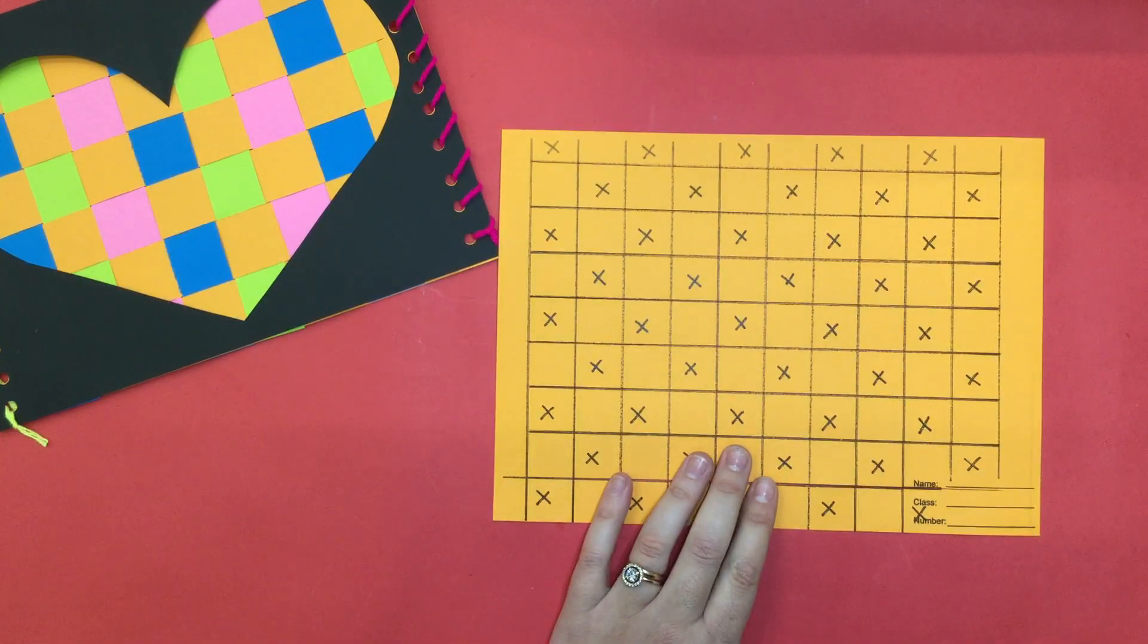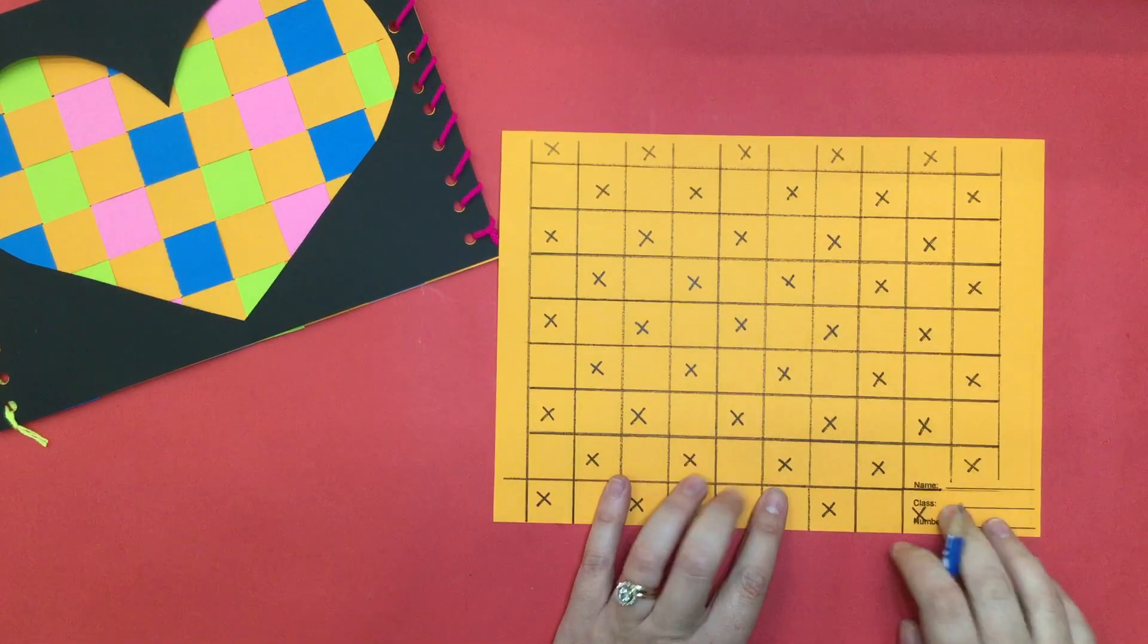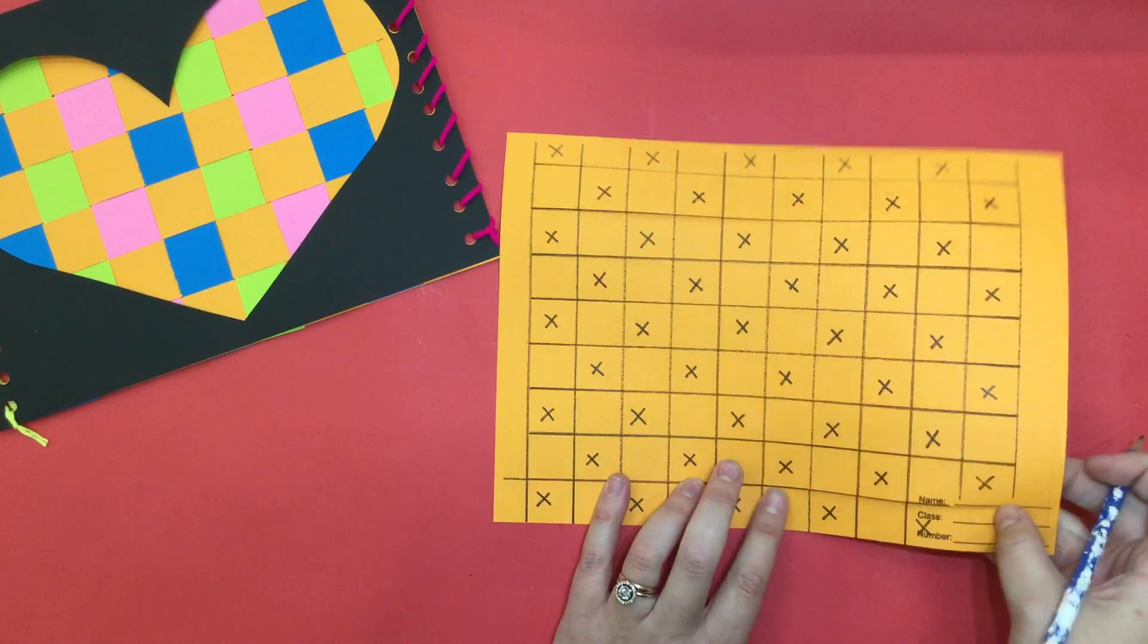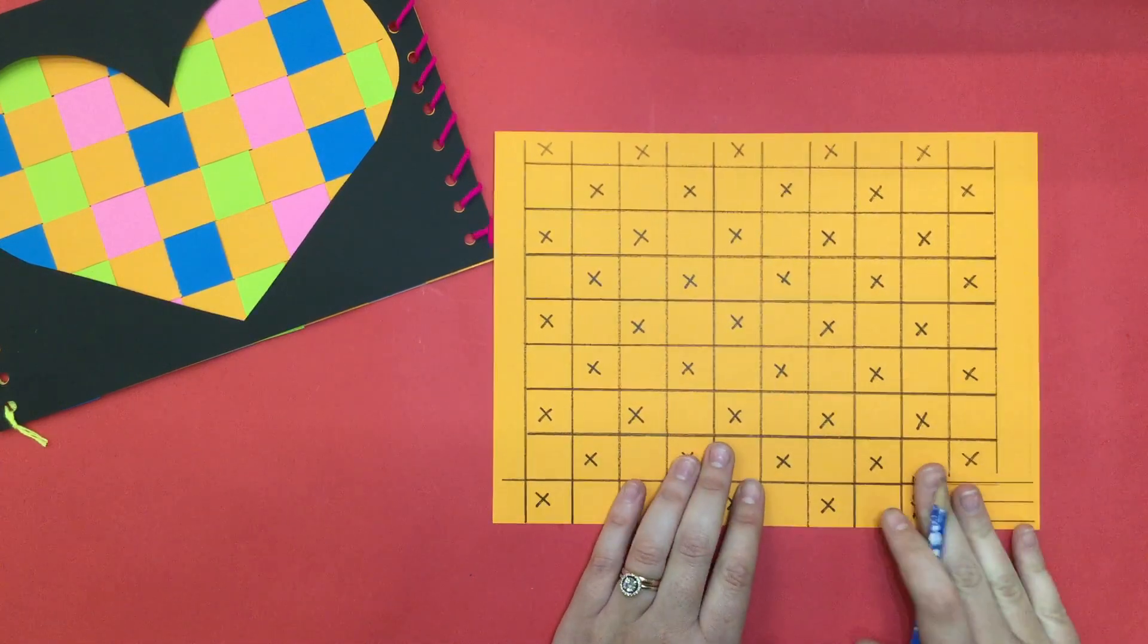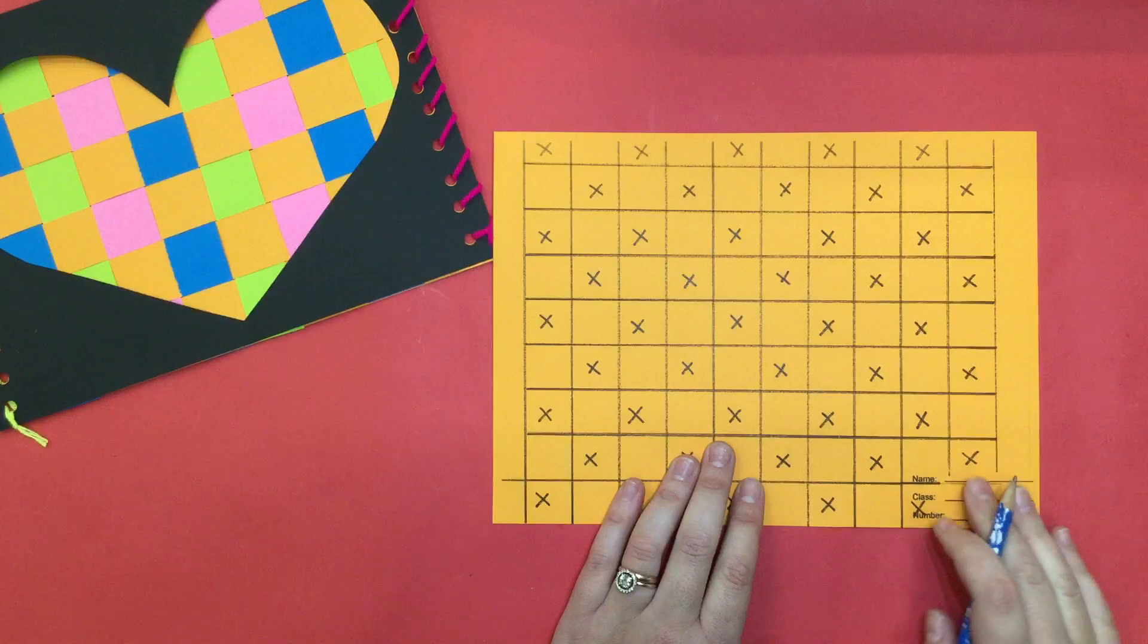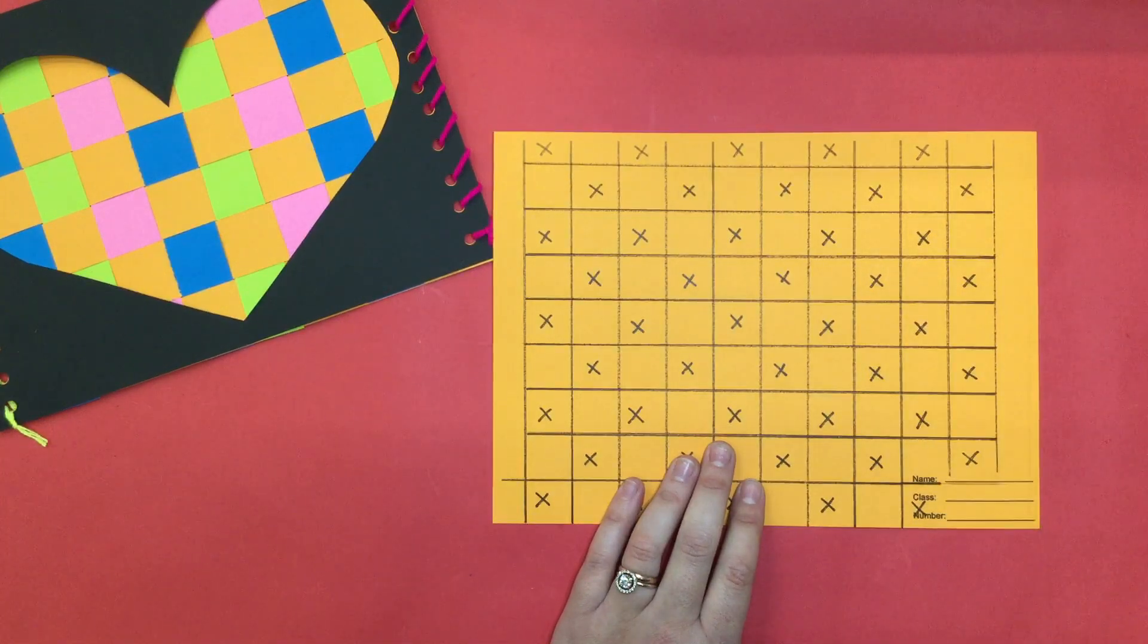On the back you'll see your name and class number, but you'll notice that there's some cuts in your name and class number, so what we're going to do is we're first going to do our first line of our weaving and then we can write our number.